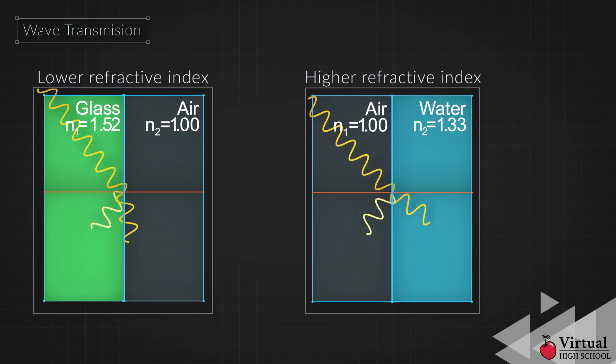Lastly, it is important to note what happens to light that is transmitted through the second medium. Notice that regardless of whether the second medium has a higher or lower refractive index, transmitted light does not undergo a phase change or flip.